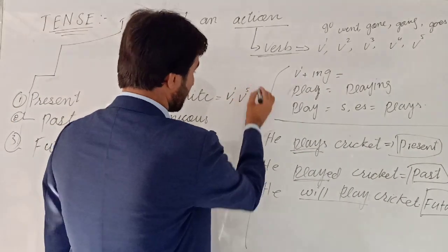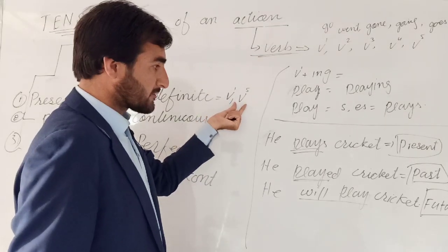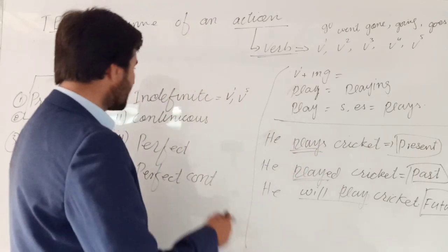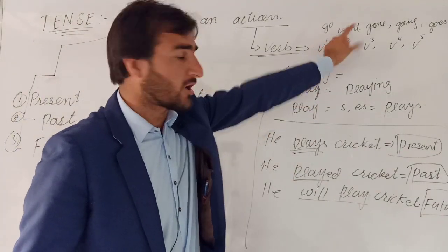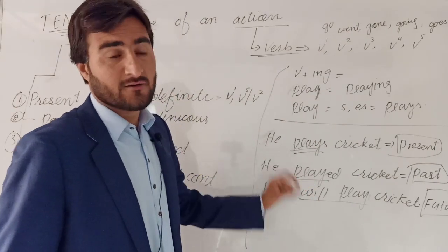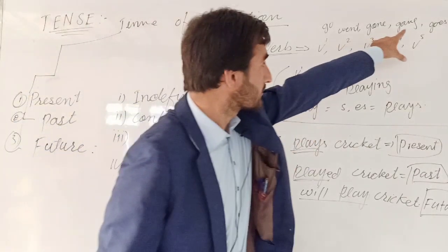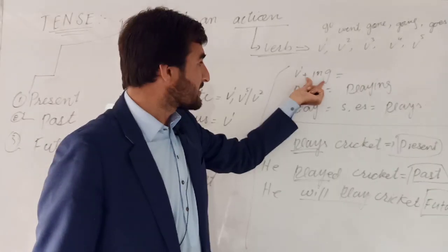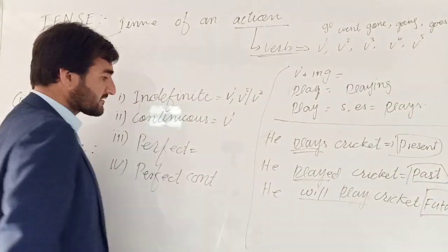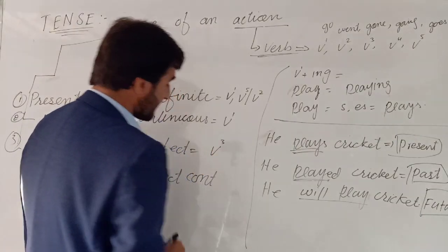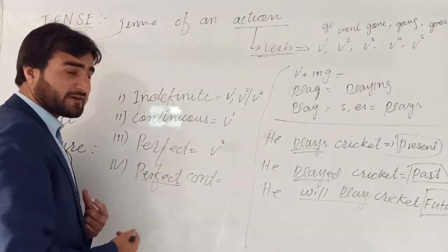In the simple or indefinite tense, V1 or V5 means the first form with 'S' or 'ES' added. In the continuous tense, we use V4 — that is, the ING form. In the perfect tense, we use the third form, V3. In the perfect continuous tense, we use both the perfect and the continuous — V3 combined with V4.